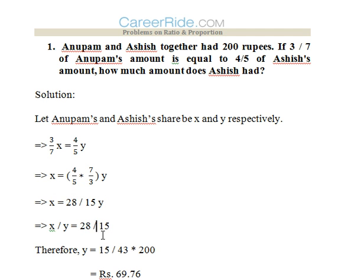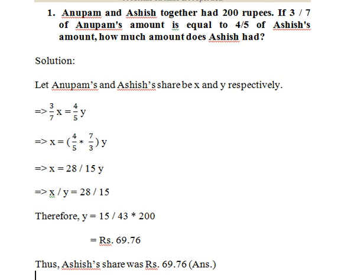Now we can clearly calculate y from this. Y is equal to 15 upon 28 plus 15, that is 43, into 200 that is the total amount. So y's share, that is Ashish's share, would be 69.76 rupees.